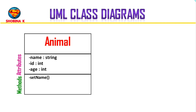The method begins with a lowercase letter. Next, you put parentheses to signify the function. You can also add variables and data types here, but in most cases it is not necessary. We will add visibility and parentheses to the eat method as well.